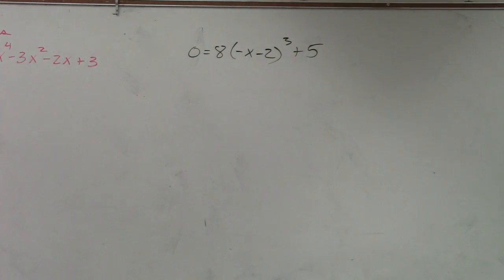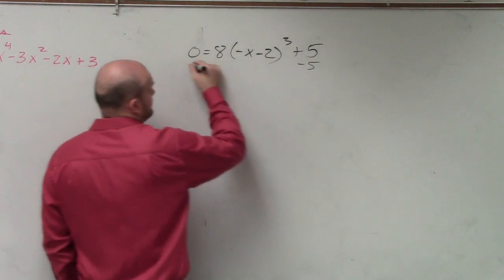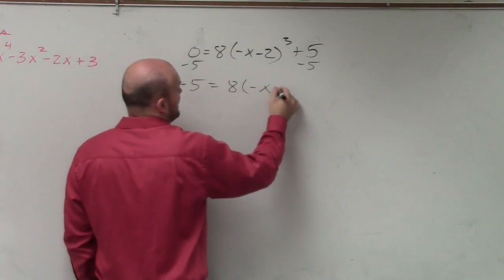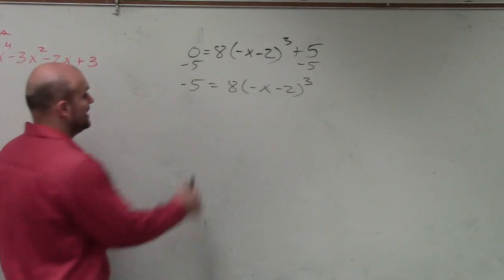When we're solving, ladies and gentlemen, we just want to use our inverse operation. So I'm going to subtract the 5 first. So I have negative 5 equals 8 times negative x minus 2 cubed.